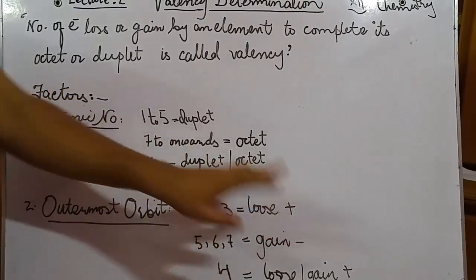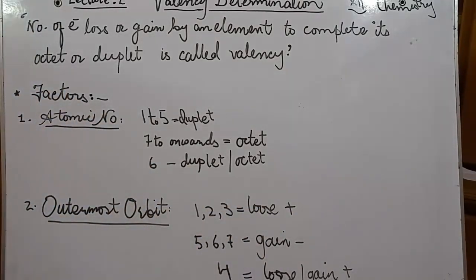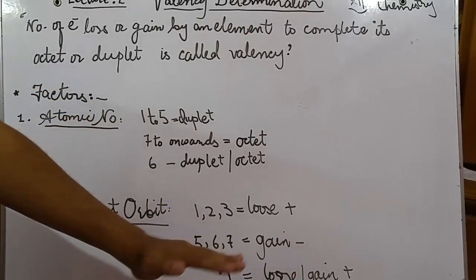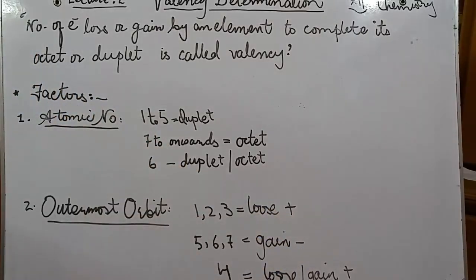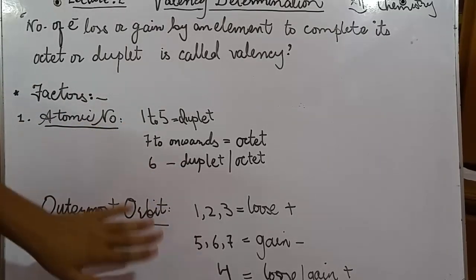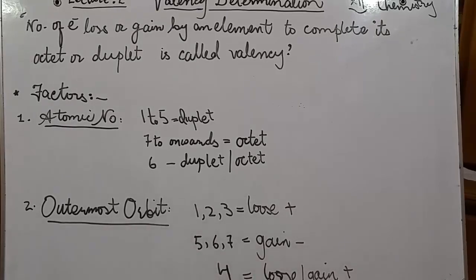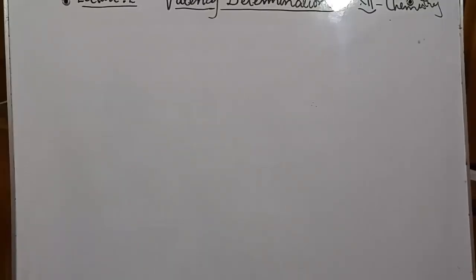The reason for this sign convention is that electrons are negatively charged particles. When an atom loses an electron, it becomes positively charged — so we use the positive sign for losing electrons. When an atom gains an electron, it accumulates more negative charge, so it becomes negative — we use the negative sign for gaining electrons. Also, if an element has four electrons in its outermost orbit, it can either lose electrons to complete the duplet or gain electrons to complete the octet.